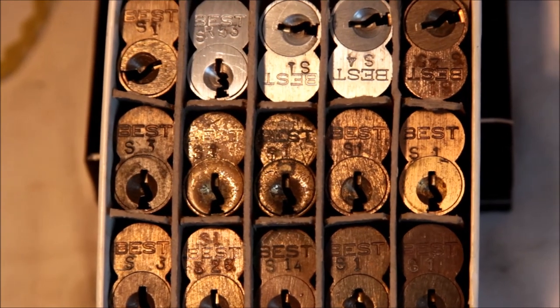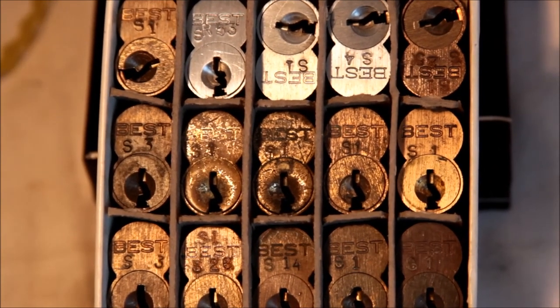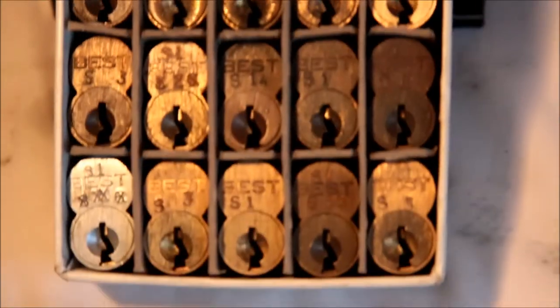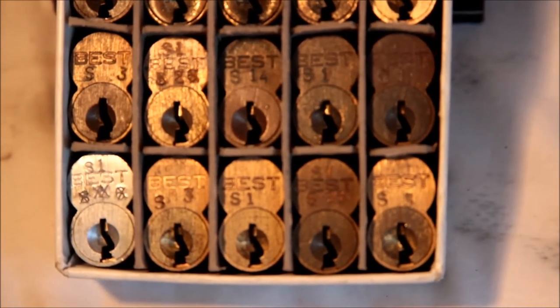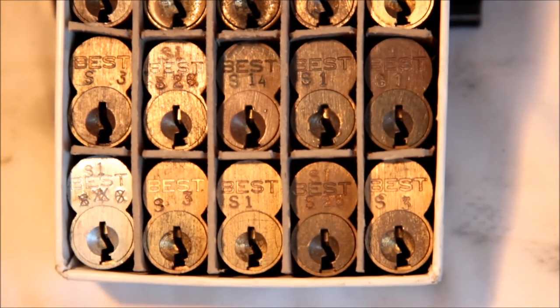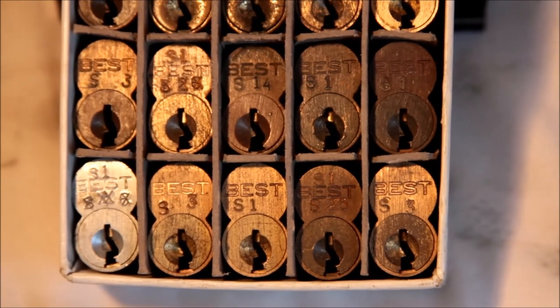So there's the top row, second row, and then bottom row. Third and fourth rows. There you go.